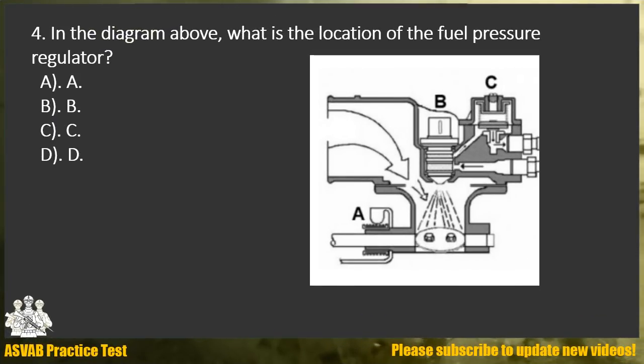Question 4. In the diagram above, what is the location of the fuel pressure regulator? A. A. B. B. C. C. D. D.